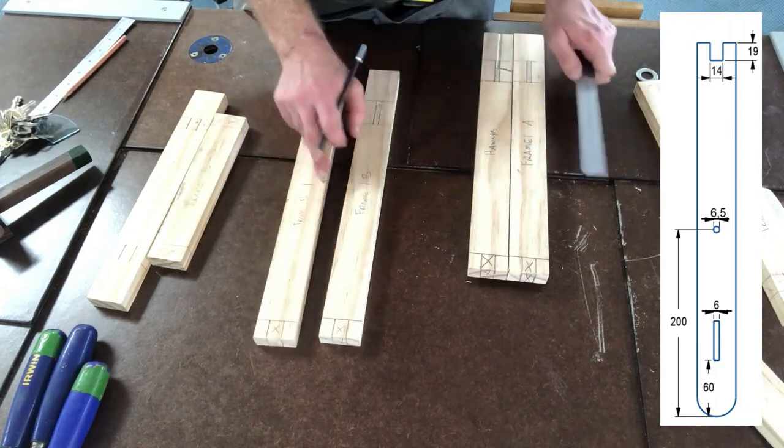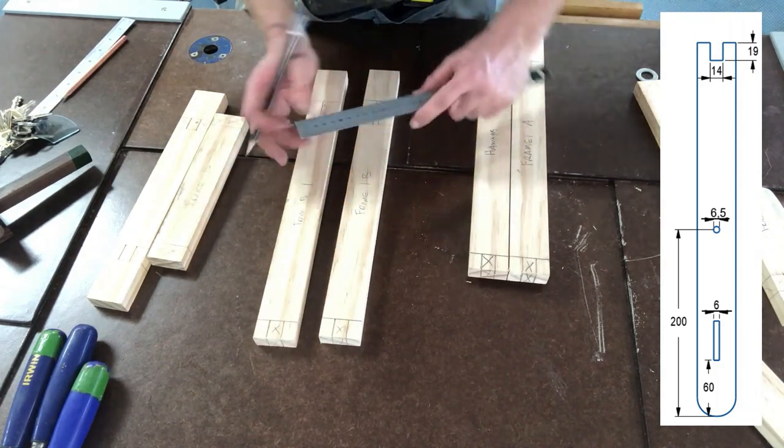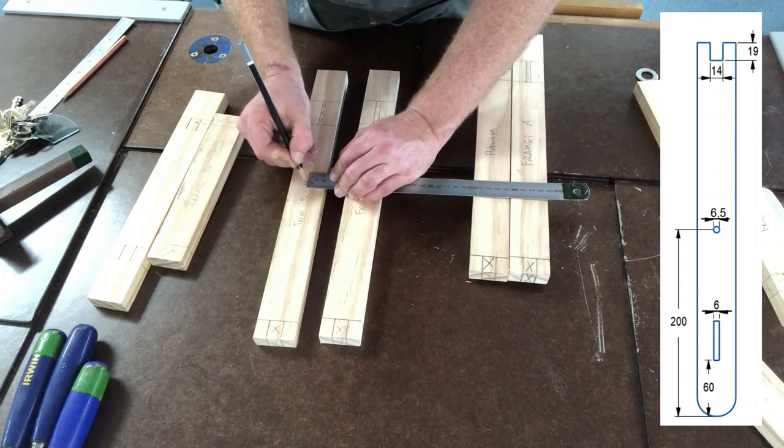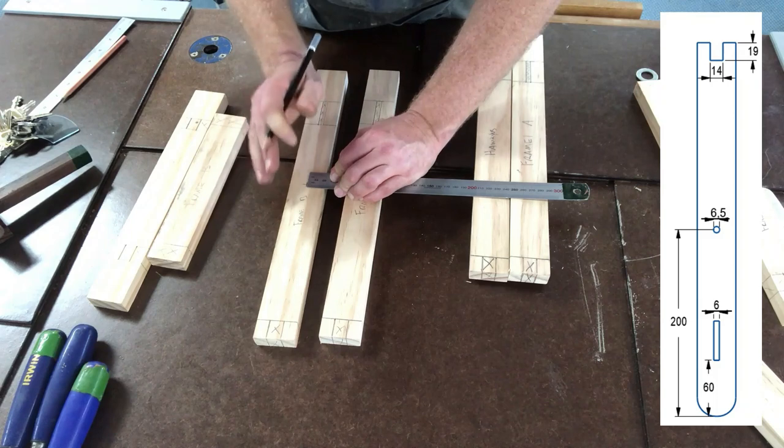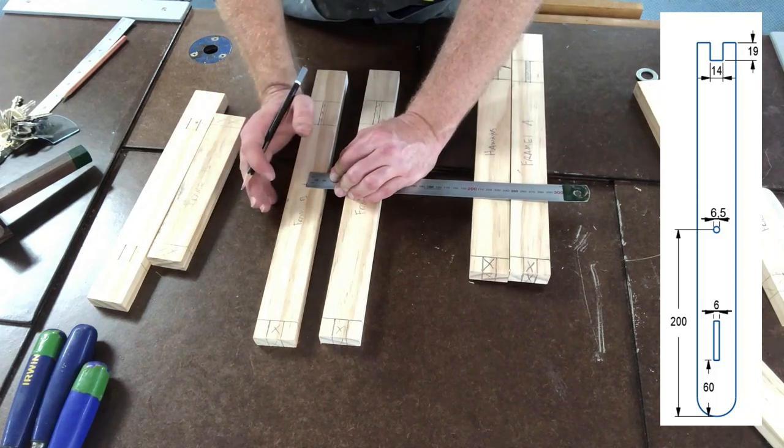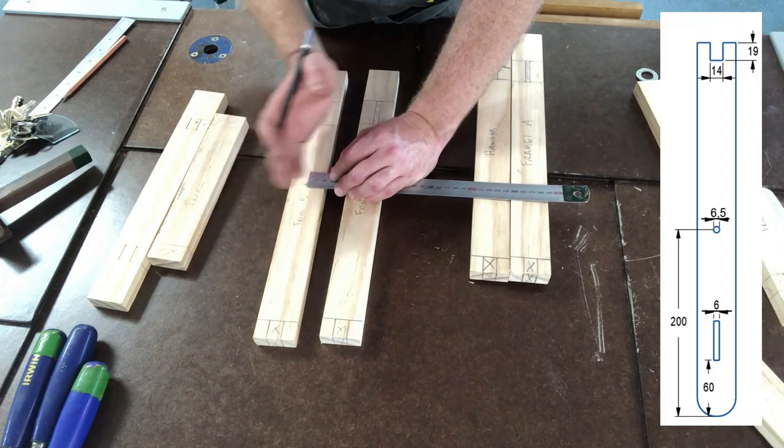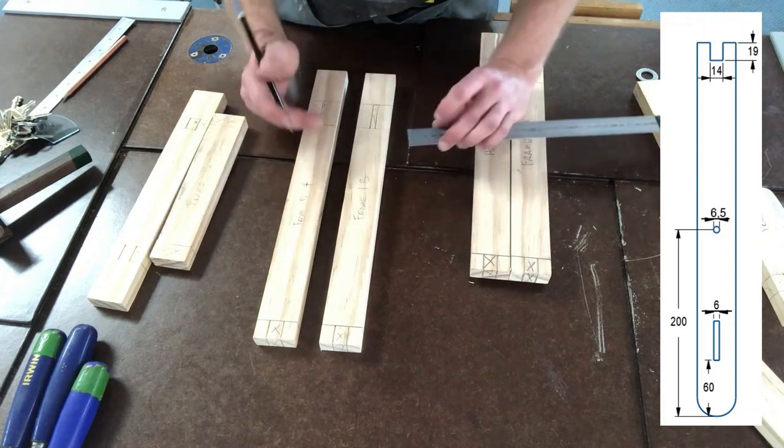Now the width of our timber is 42mm, so if we measure in half of that which should be 21mm, just double check with your material as it may be slightly different. If your material is 40mm you have to adjust your measurements. Just make sure yours is in the center.